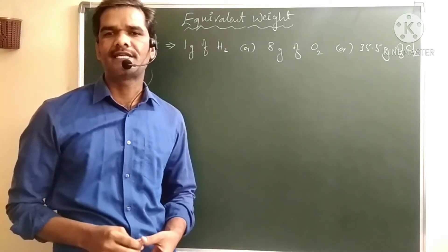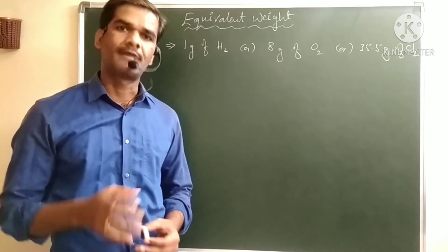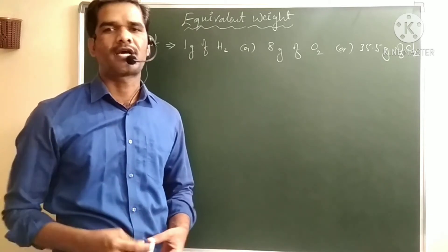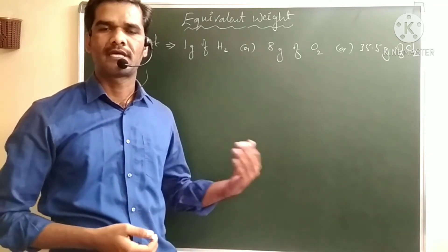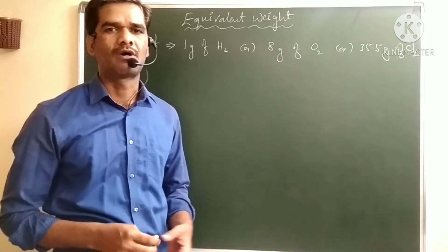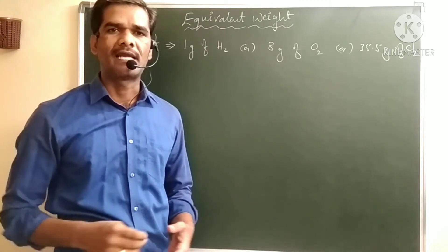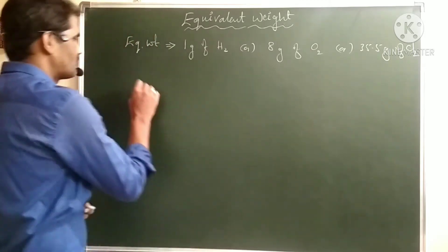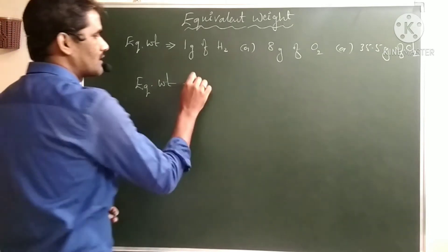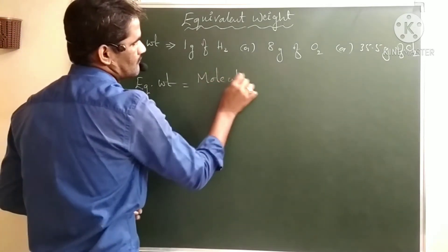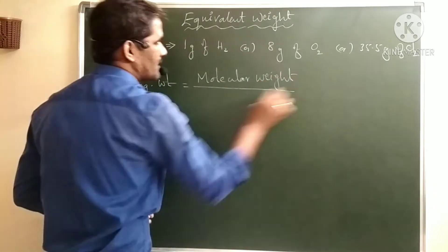Then how to calculate this equivalent weight for a substance? Equivalent weight is different for the same substance — it depends on its chemical reaction. The substance may have one kind of equivalent weight whether it undergoes oxidation reaction, reduction reaction, or acts as a salt or as an acid. It depends on the condition. Equivalent weight of any substance is equal to molecular weight of that substance divided by its n-factor.